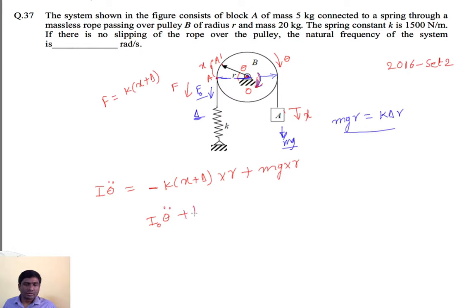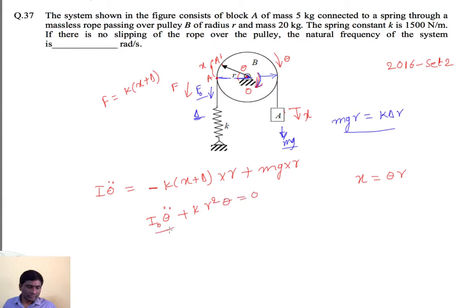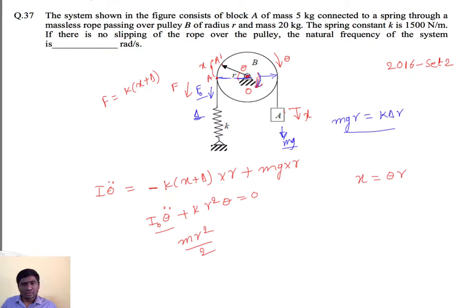Finally we get: I_naught·θ̈ plus K·X·R equals zero. Since X equals theta times R, substituting gives K·R²·theta. The moment of inertia I_naught equals MR²/2 for a disk (rotation through center O). Substituting: MR²/2·θ̈ plus K·R²·theta equals zero, which simplifies to give omega equals √(2K/M).